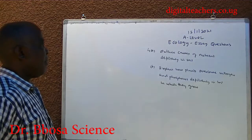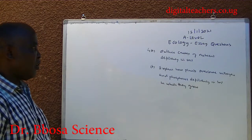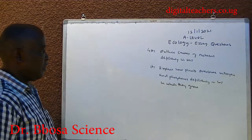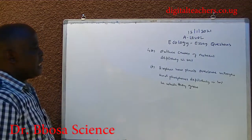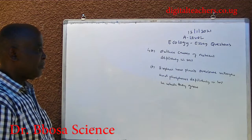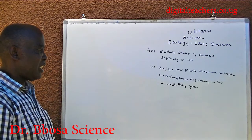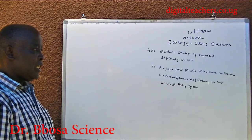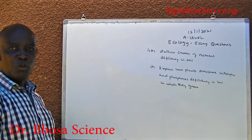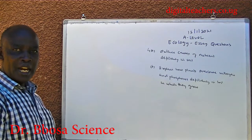Number 4. A: Outline causes of nutrient deficiencies in soil. B: Explain how plants overcome nitrogen and phosphorus deficiencies in the soil in which they grow. You can pause and answer.